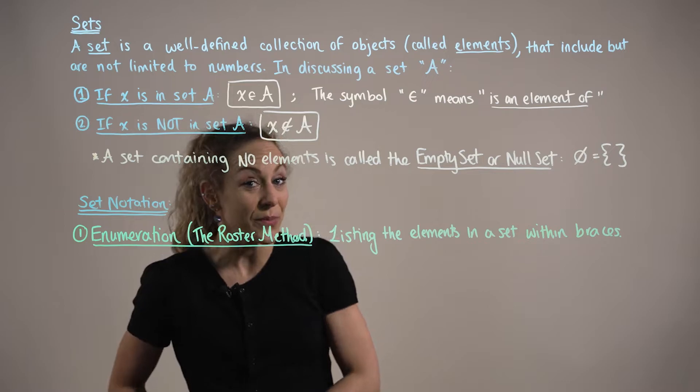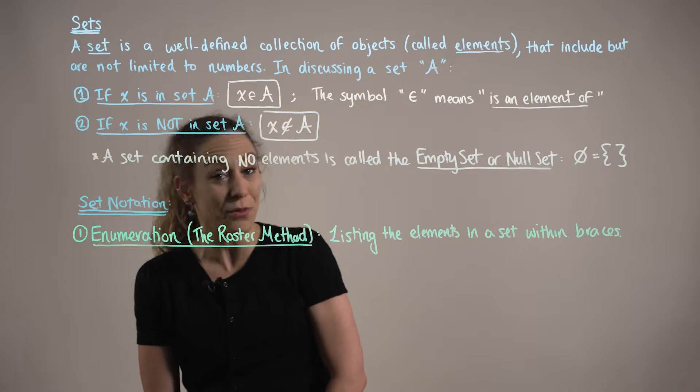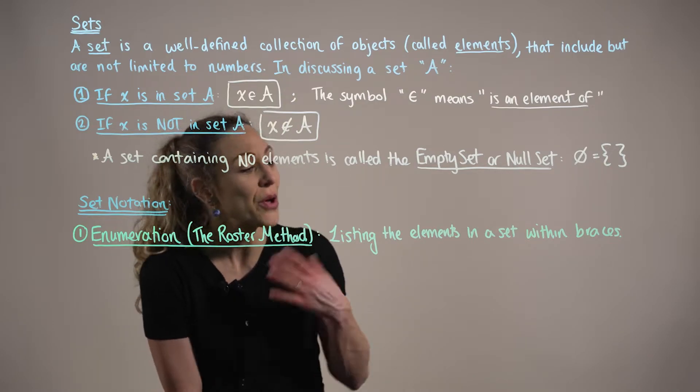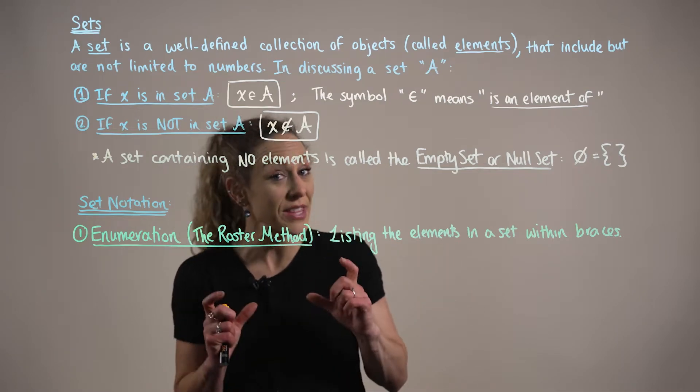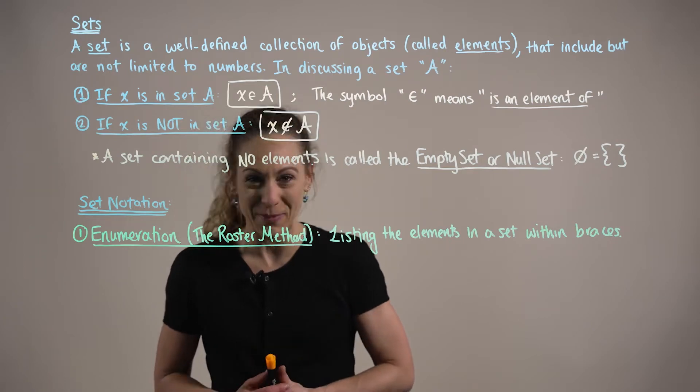So the first way that we can define a set is using enumeration, which is also sometimes referred to as the roster method. Using this method for set notation, we simply list the elements in the set within braces. So let's look at an example to help us better understand.